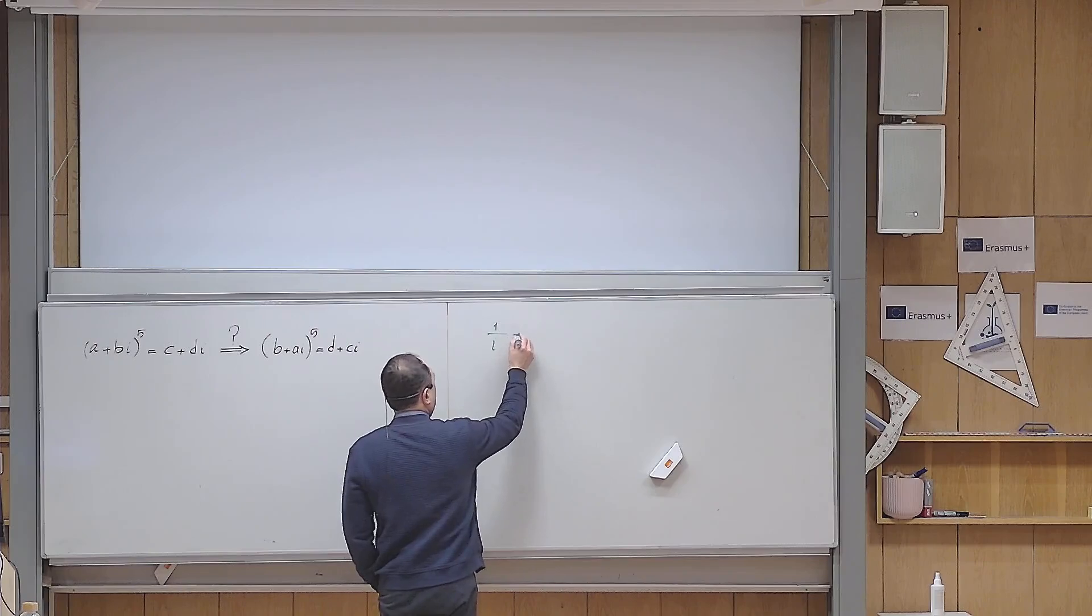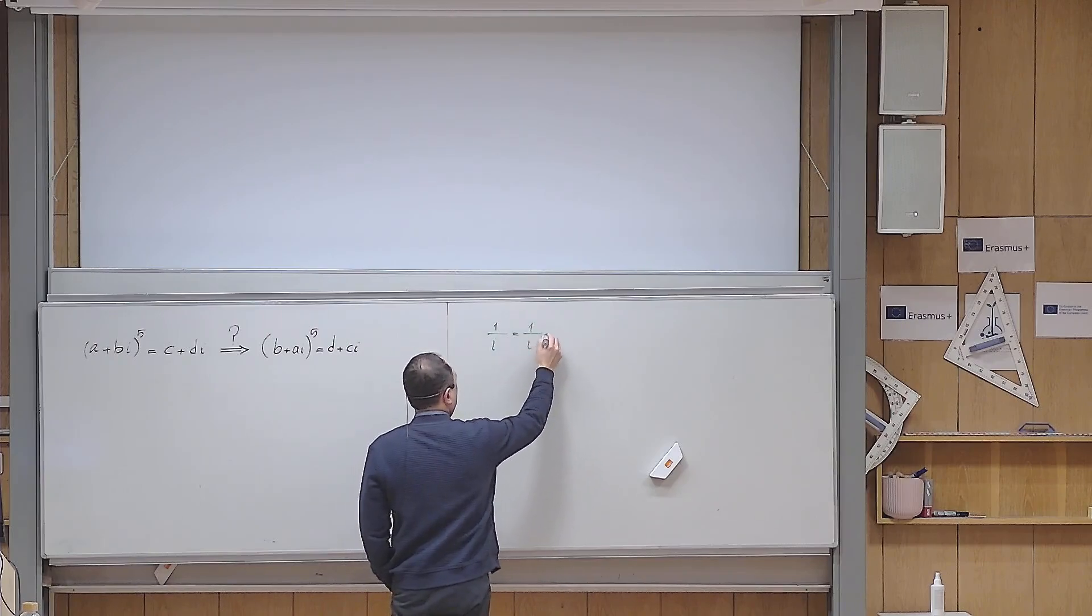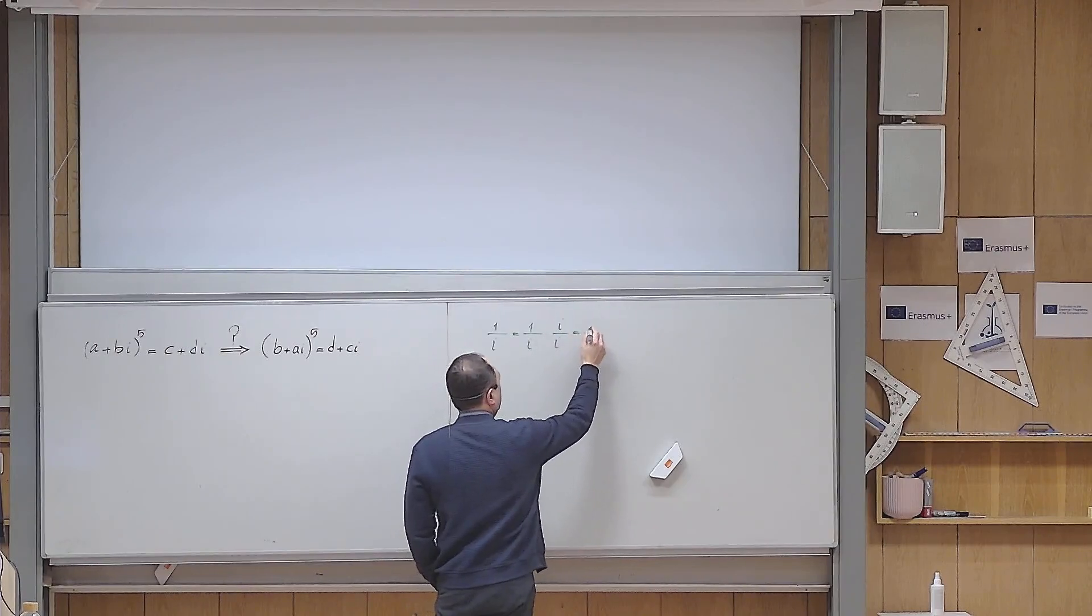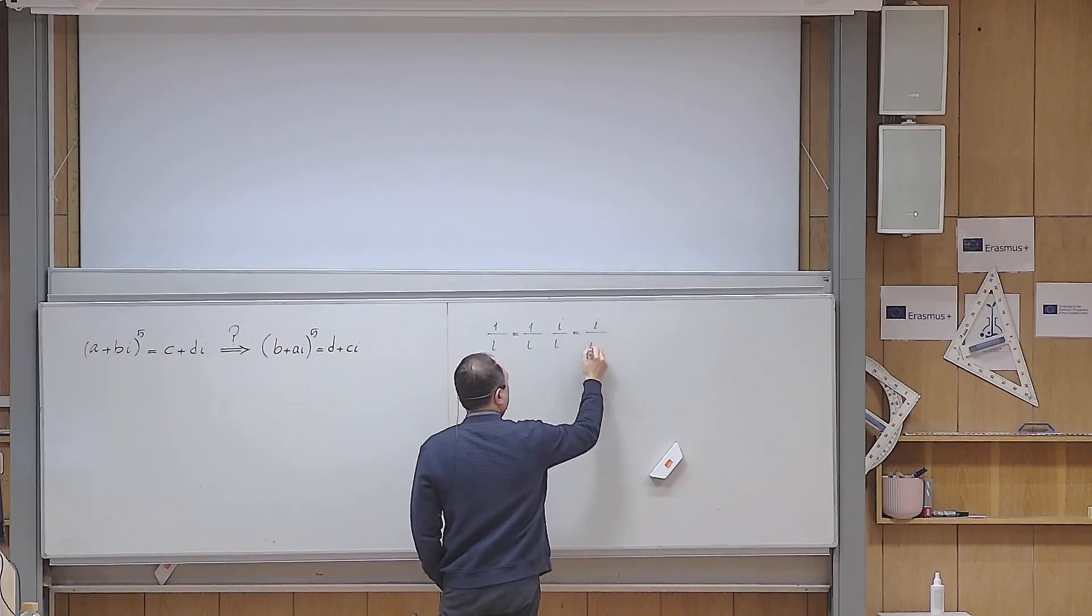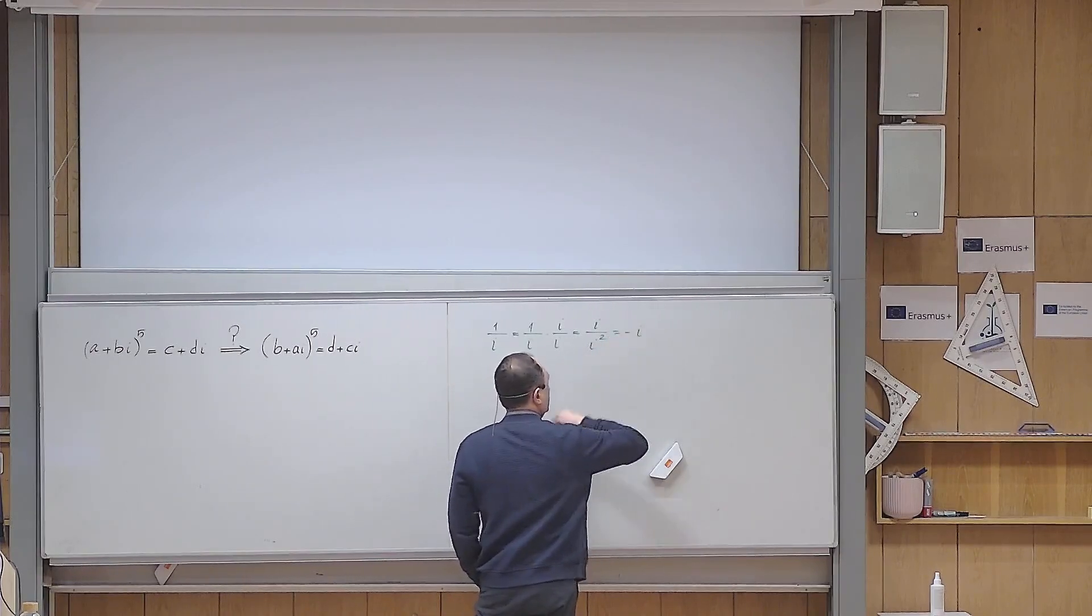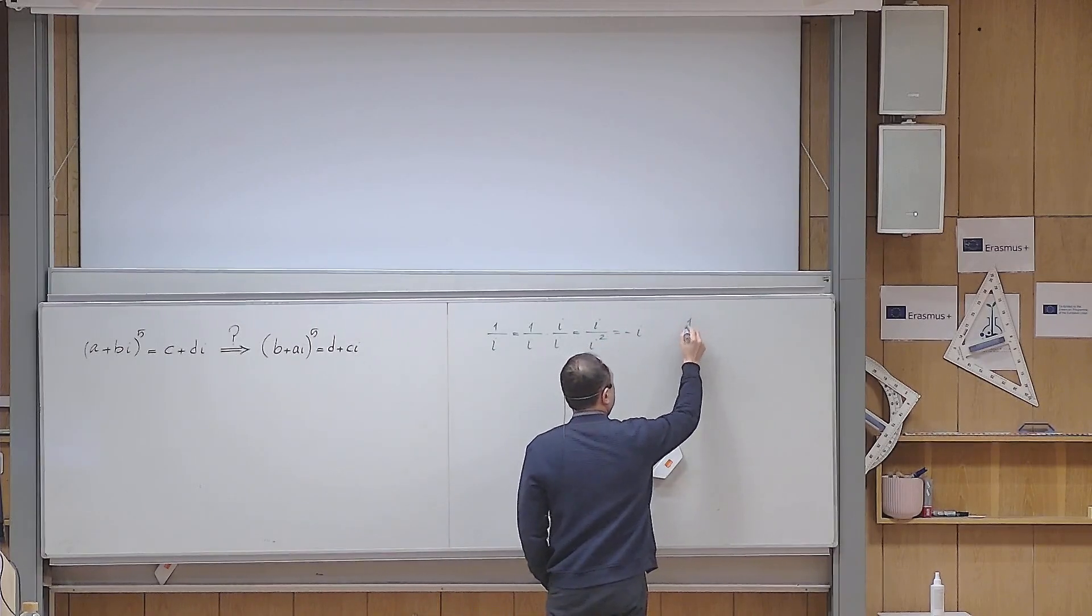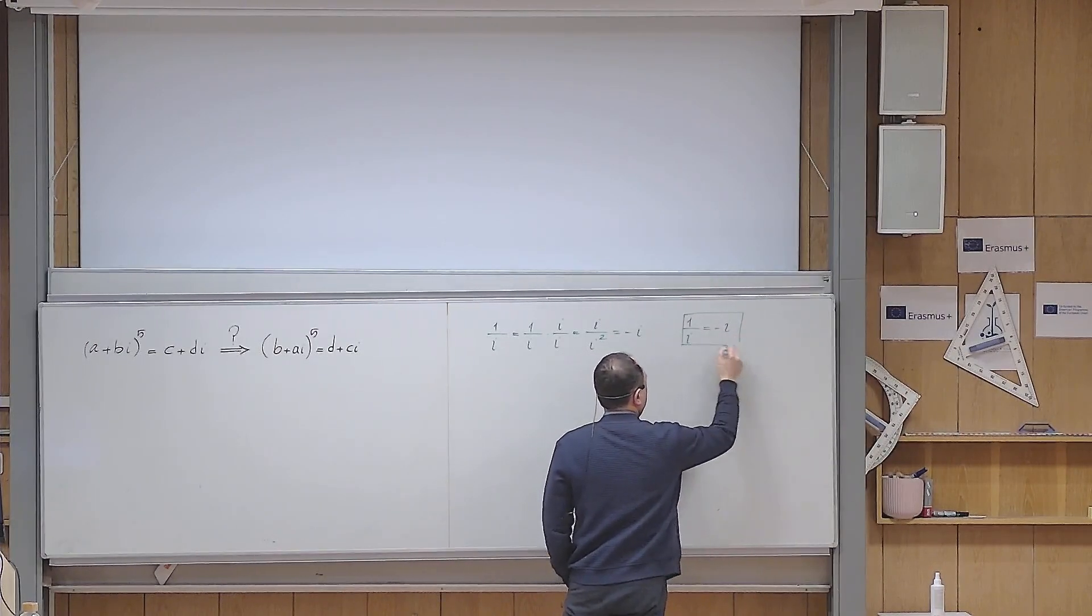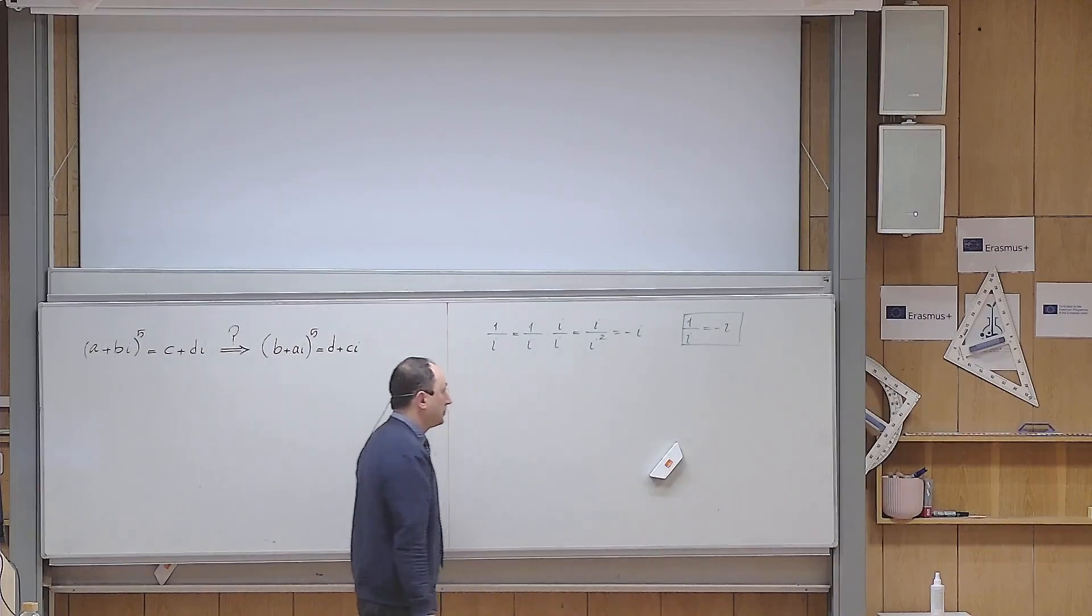this can be written as 1 over i multiplied by i over i, and it becomes i over i squared. But i squared is minus 1, so it becomes minus i. So what we have is 1 over i equals minus i. So that is the property that I want to exploit here.